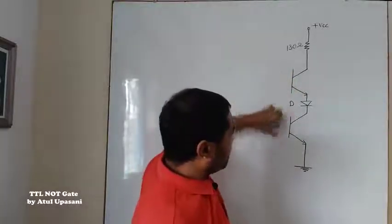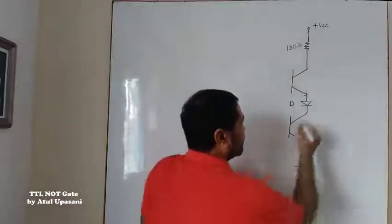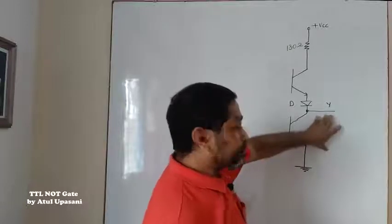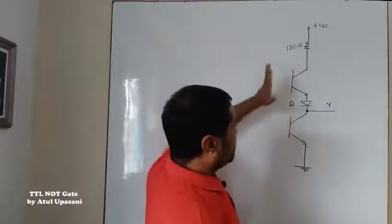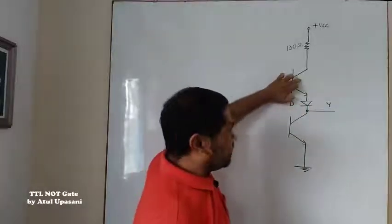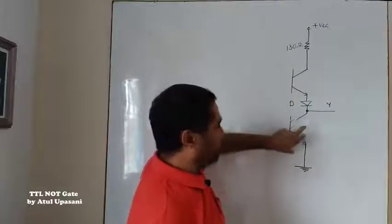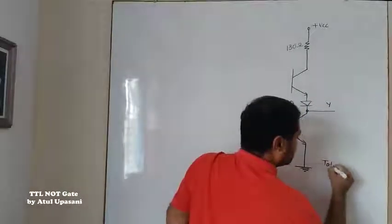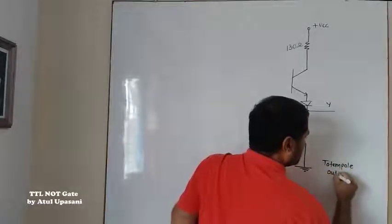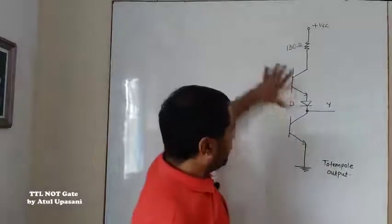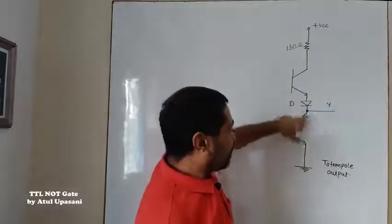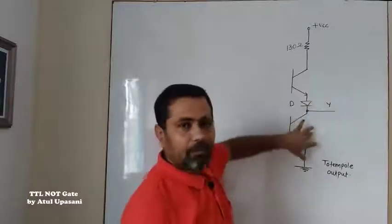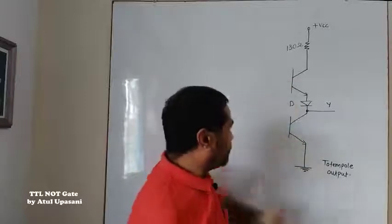These two transistors are in series and the output is taken in between their common connection. Whenever one transistor is ON, the other will be OFF. This type of connection is called a totem pole output connection — whenever there are two transistors and output is taken from their common connection, any one of the transistors will be ON at the same time.